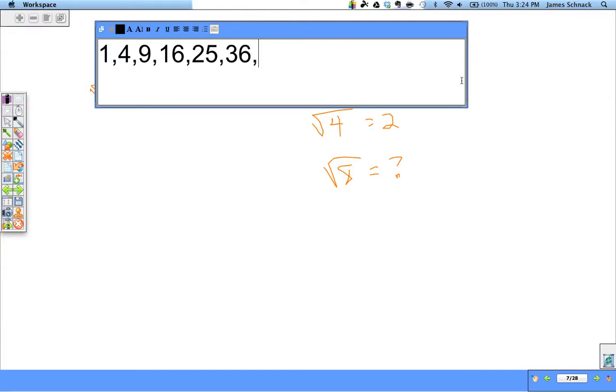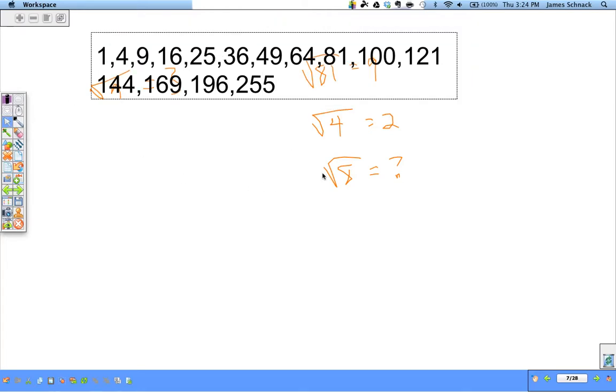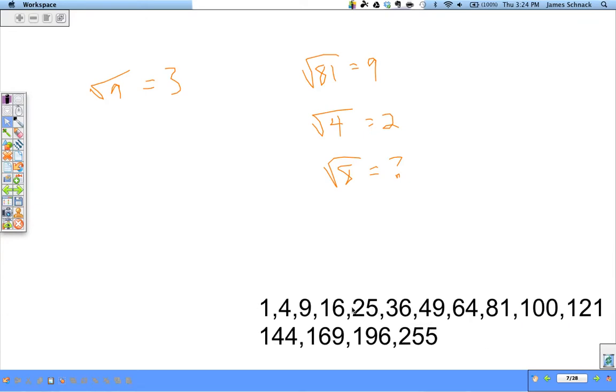So we have 36, 49, 8 squared is 64, 9 squared is 81, then comes 100 that's 10 squared, 121, 144 is 12 squared, 169 13 squared, 14 squared is 196, and 15 squared is 225. We could keep going with this list as long as we wanted to, but these are ones that you should know. At the bare minimum up to 10 squared, but going a little bit beyond never hurt anybody.